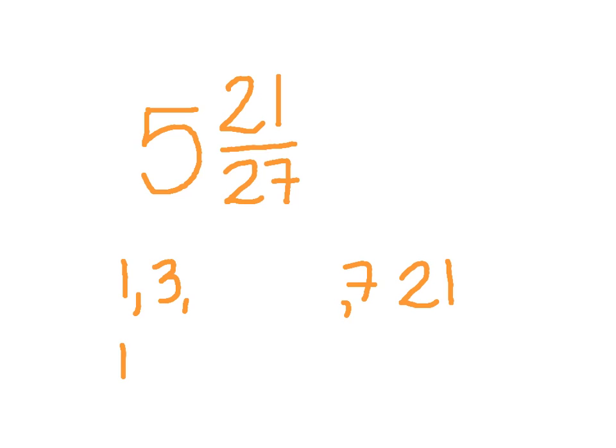Do the same thing for 27. 1 times 27. 3 times 9. And that's it. Now I'm going to look for the one that they have in common, and you can see that 3 is what they have in common.